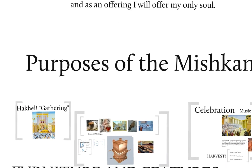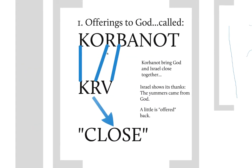What did you do with the Mishkan? What's it for? The first main purpose is that you would offer korbanot. In English we say 'sacrifices,' but you lose some of the meaning. The root of korbanot is k-r-v, kuf-resh-vet, meaning 'close.' Korbanot bring God and Israel close together. Israel shows its thanks for food by offering a little back to its source, growing closer to God by showing that appreciation.